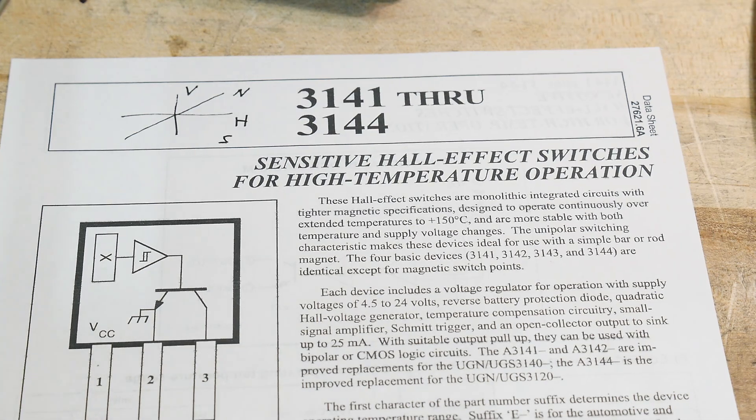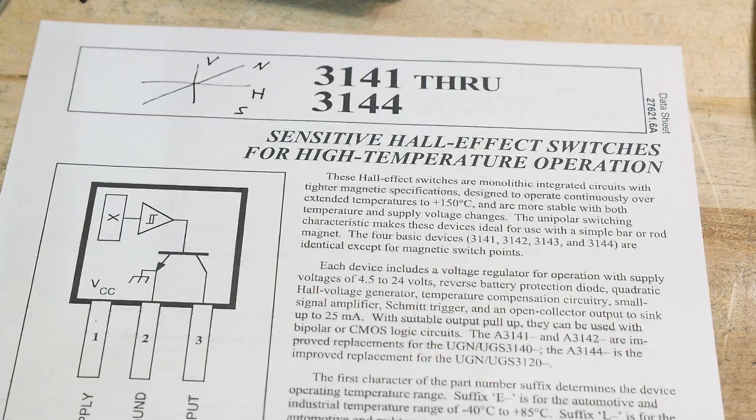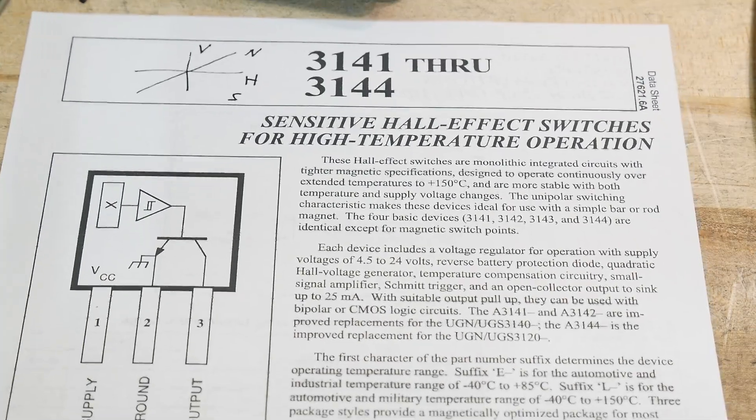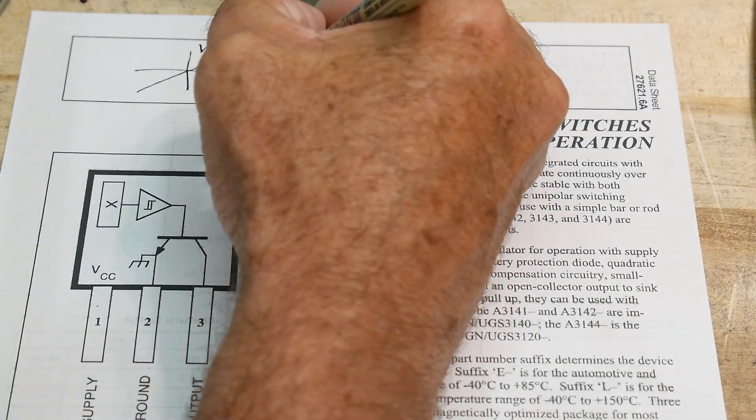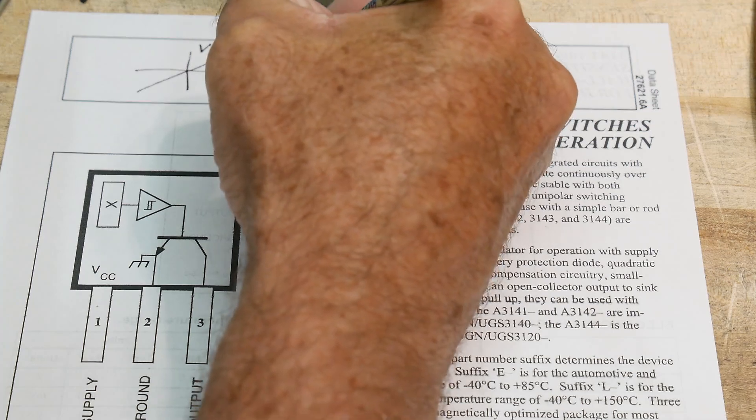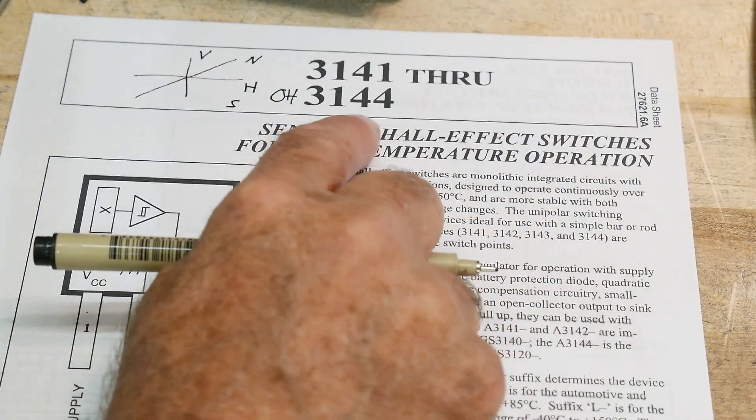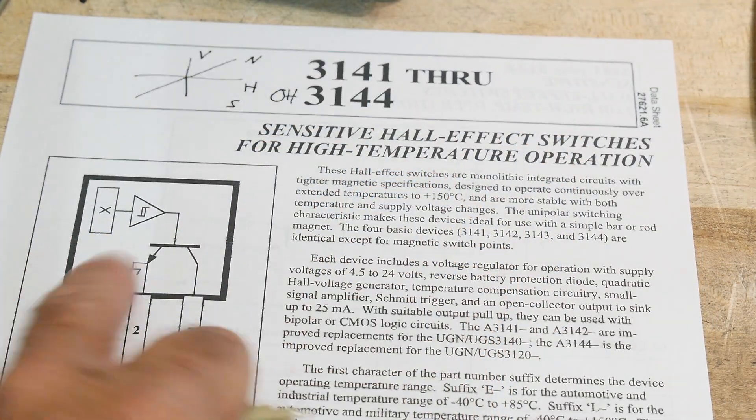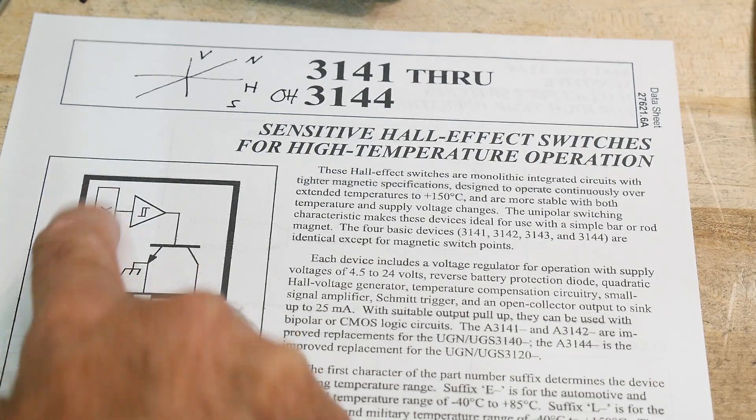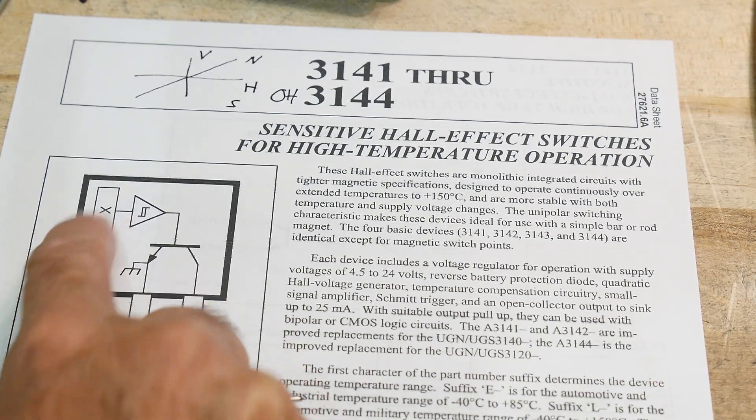There are other types of Hall effect sensors, like this one. These are probably more common, actually. I have an OH 3114. And it's a Hall effect sensor, which is denoted in this box with an X in it. That's the Hall effect sensor.